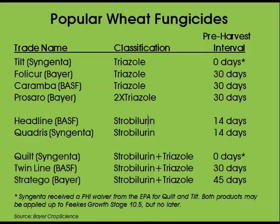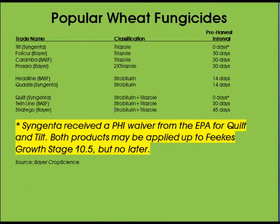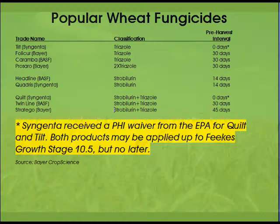Regardless of the chemistry classification, farmers must be aware of the product's pre-harvest interval as defined on the product label. Some Kansas farmers ignored the pre-harvest interval in 2008, causing a temporary embargo of harvested wheat from thousands of acres.